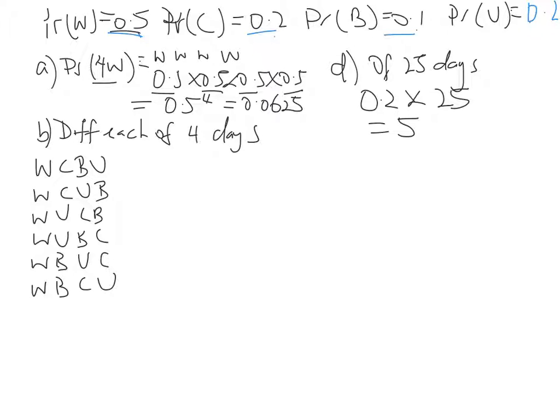Now we're looking at B. B tells us he takes a different mode of transport on each of the 4 days. So one day he walks, another day he catches, another day he gets a lift, another day he rides his bike, another day he gets Uber. The next day, or that's one possibility, he may walk one day, get a lift, Uber, and then ride his bike.